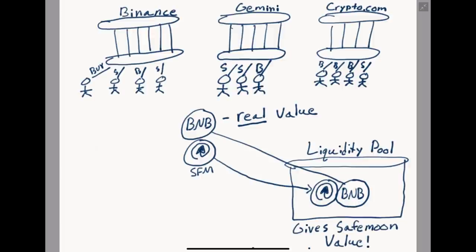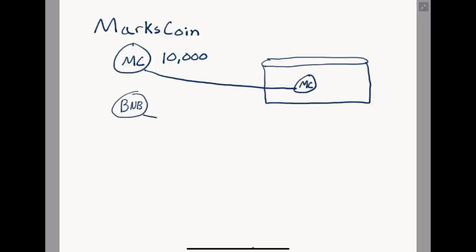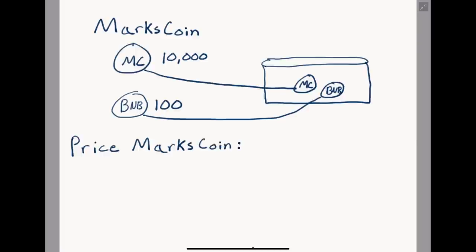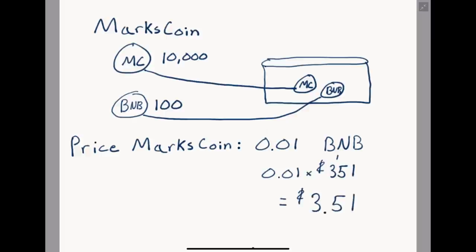Here's how this is done. Let's say I make a new coin and name it Mark's Coin. I create 10,000 Mark's Coin and decide to keep none of it, placing all of it inside a PancakeSwap liquidity pool paired with BNB. As a small startup with very little funds, I put 100 BNB into the pool with my 10,000 Mark's Coin. The initial price of Mark's Coin will now be 100 divided by 10,000, or 0.01 BNB. Using BNB's price of $351 at the time of writing, we get an initial value of $3.51 per Mark's Coin — this is how seemingly worthless tokens still have an initial value.